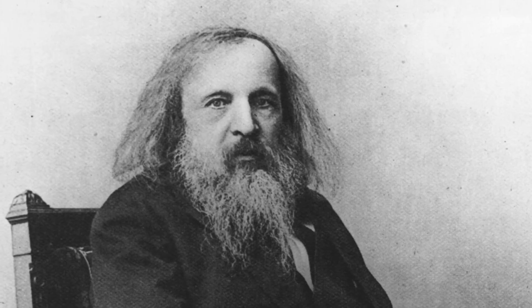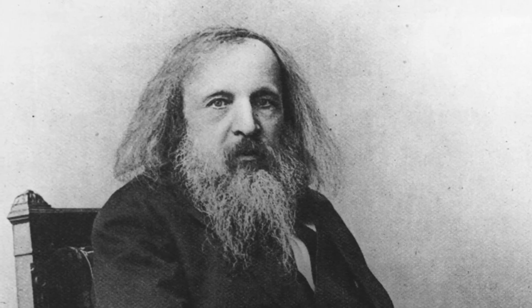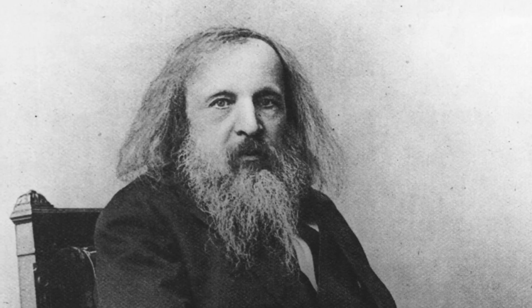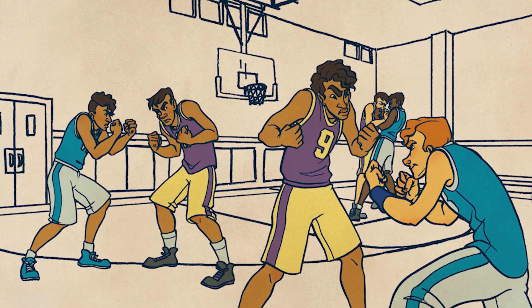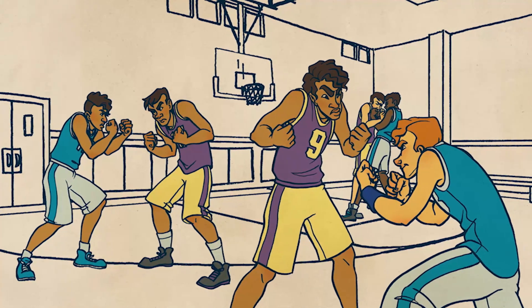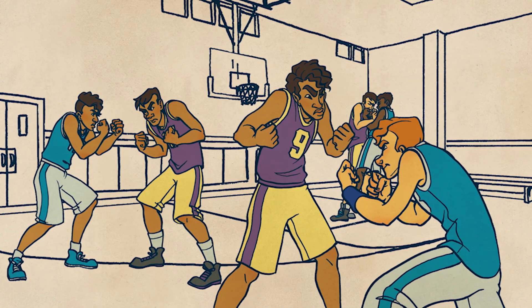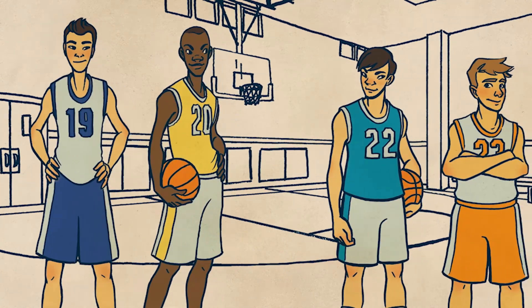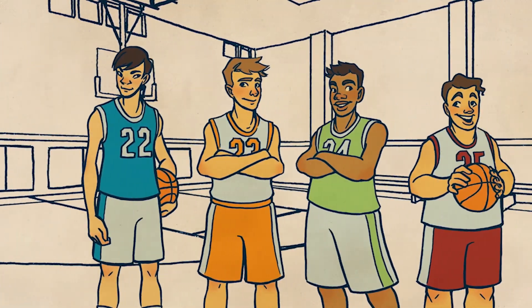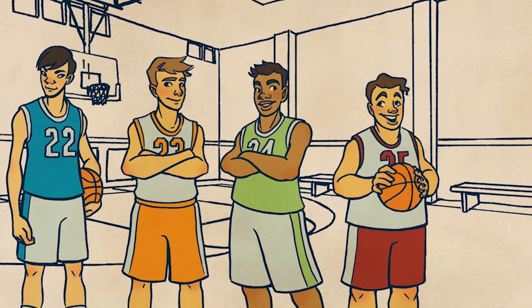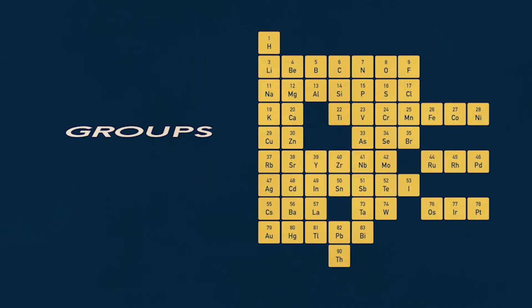Considering the complexity of the world around us, it's hard to imagine how anyone could map out all the different types of atoms. But that's exactly what Dmitry Ivanovich Mendeleev did back in the 1860s. He noticed certain elements behaved or reacted in similar ways, so he grouped them together in columns, from lightest to heaviest. We call these columns groups.